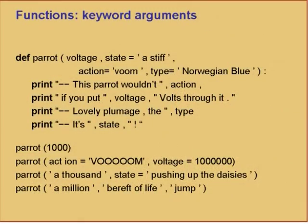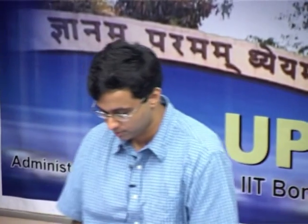Default arguments let you specify defaults; you can specify the value of a specific argument explicitly using keyword arguments — the name of the argument equals its value. I have a silly function: parrot with voltage, state, action, type. I say parrot(1000) and it says 'this parrot would not boom if you put 1000 volts through it, lovely plumage, the Norwegian blue, it is stiff.'